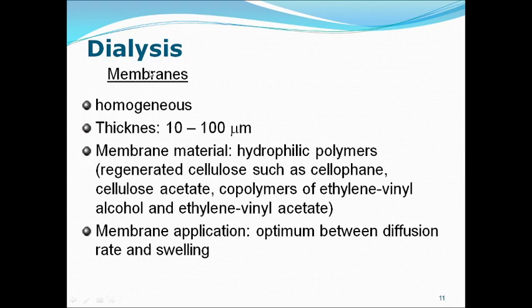Dialysis membrane features: the membrane is homogeneous, with thickness around 10 to 100 micrometers. Membrane materials include cellophane, cellulose, cellulose acetate, and copolymers of ethylene vinyl alcohol and ethylene vinyl acetate. The membrane application requires an optimum balance between diffusion rate and swelling. You can take any other materials — if they are better than these, you can select them as membrane materials.